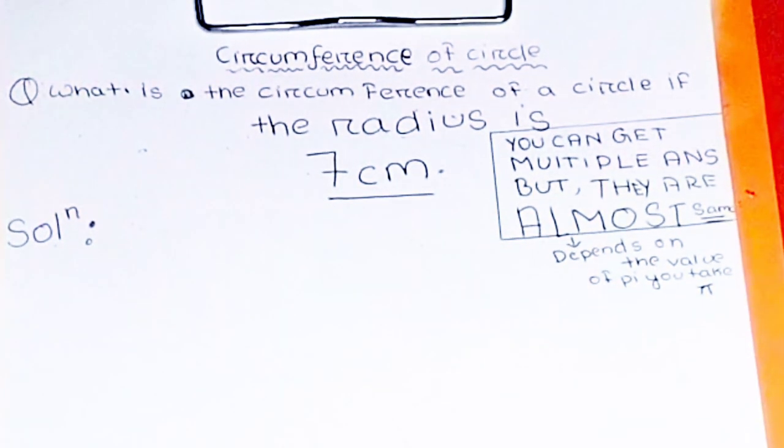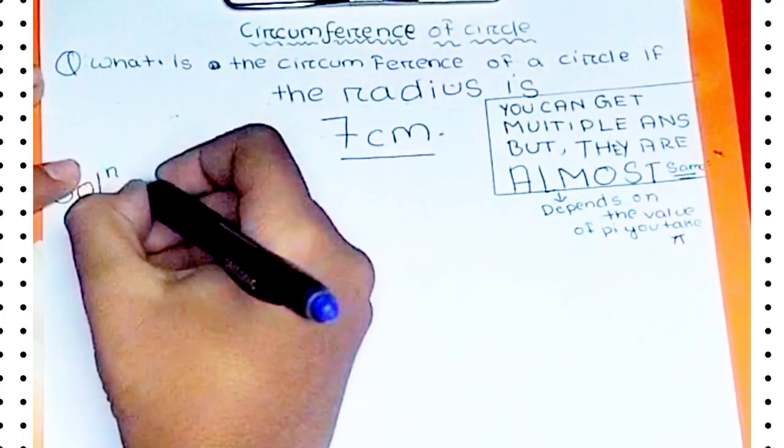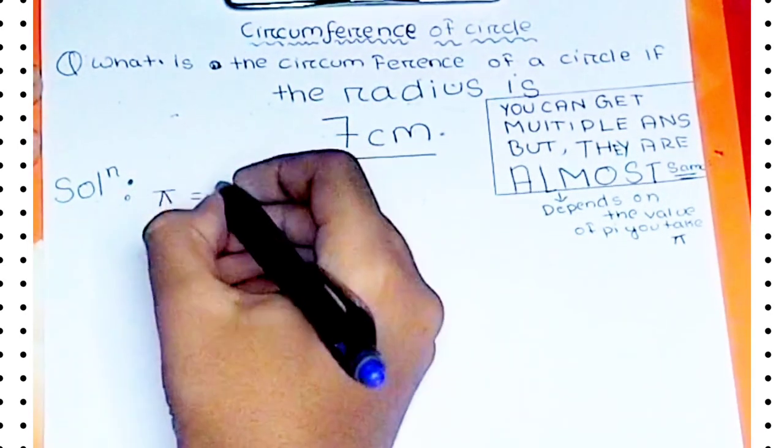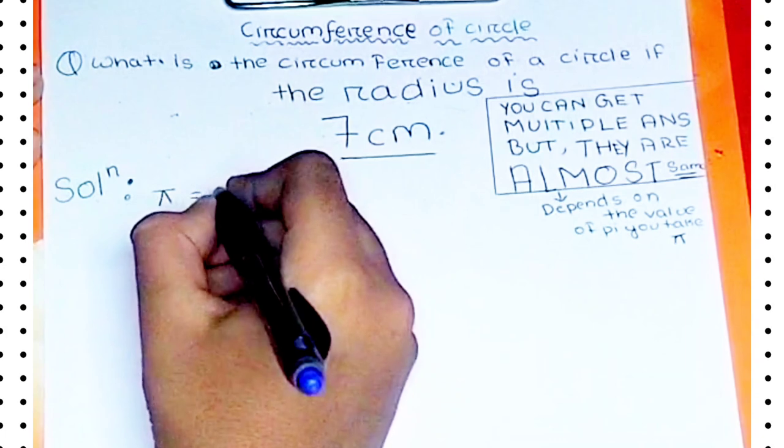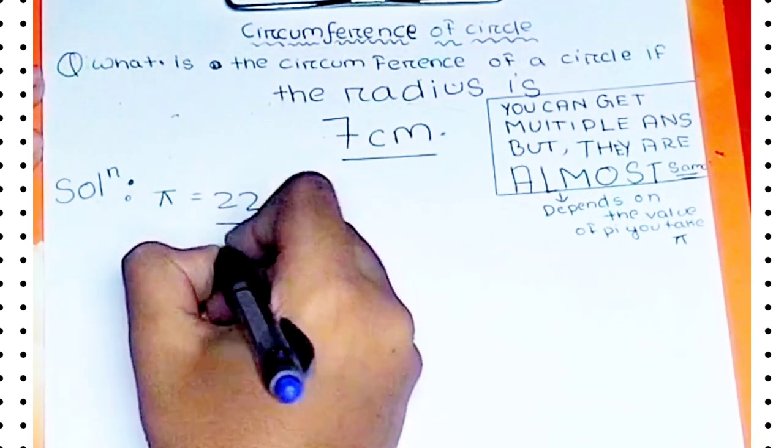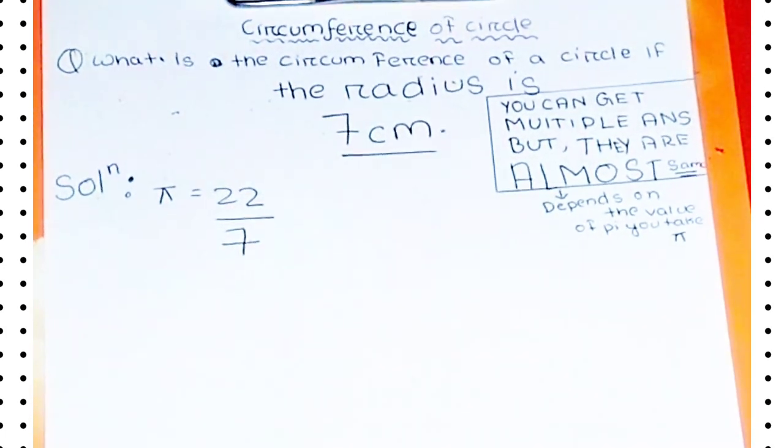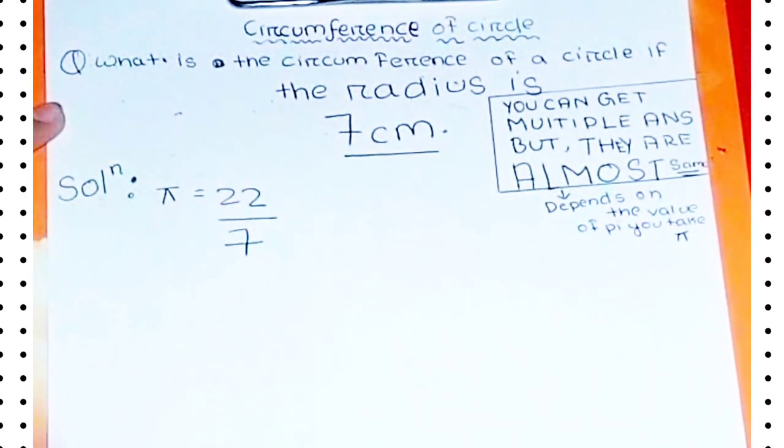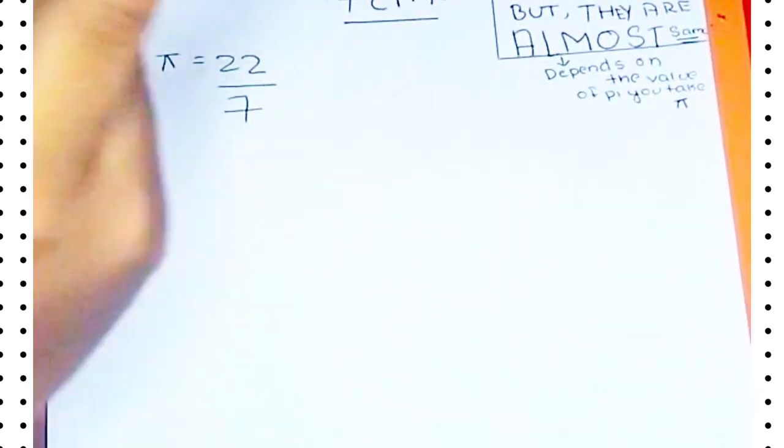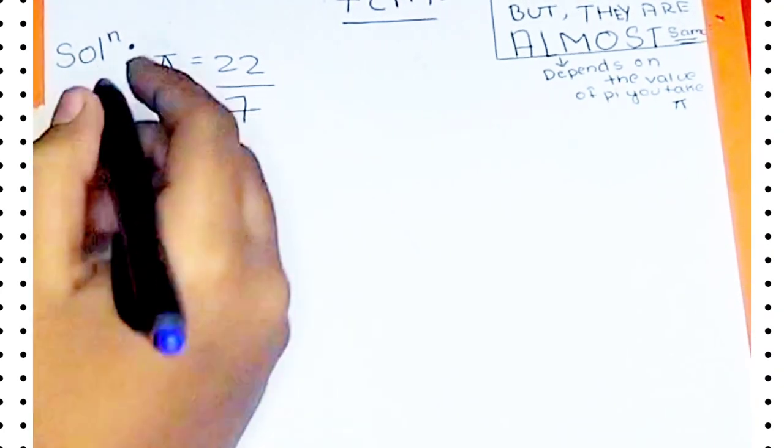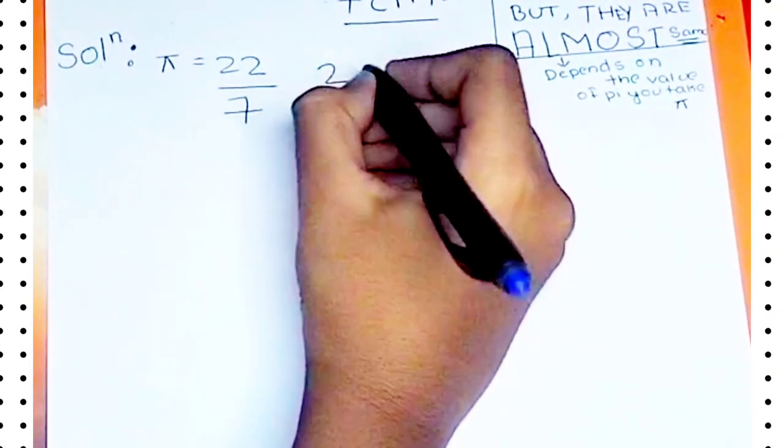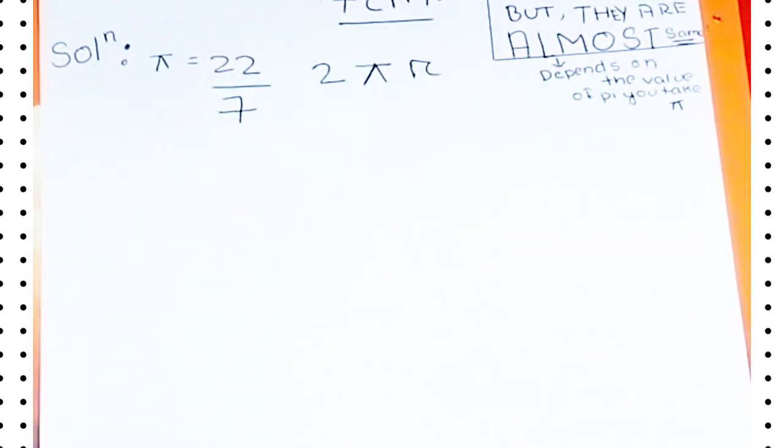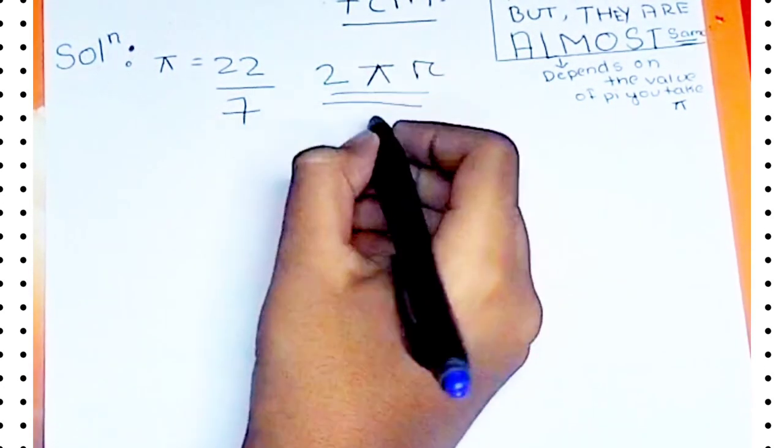Now let's first take the rough value of pi. As we know that pi's value, usually we just take it as 22 upon 7. So first let's solve with this. The formula of the circumference of a circle is 2πr.